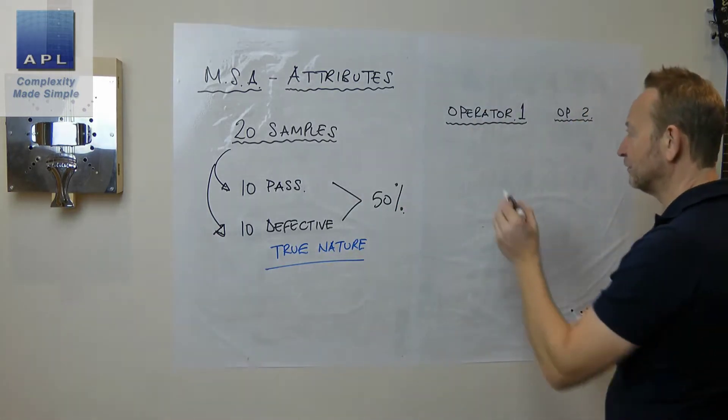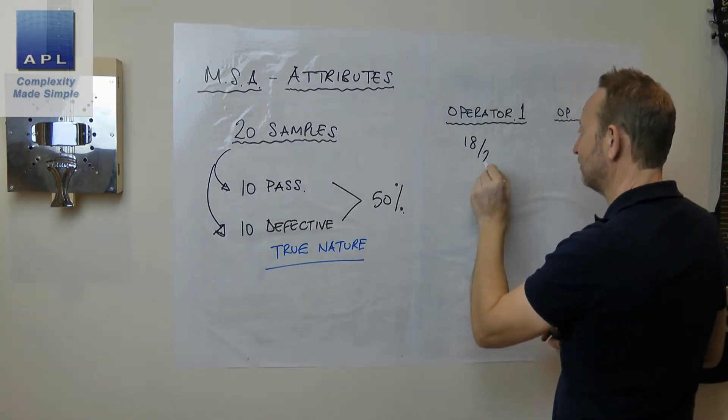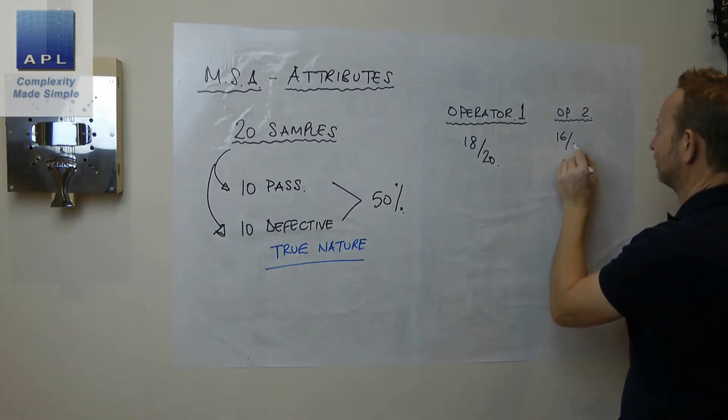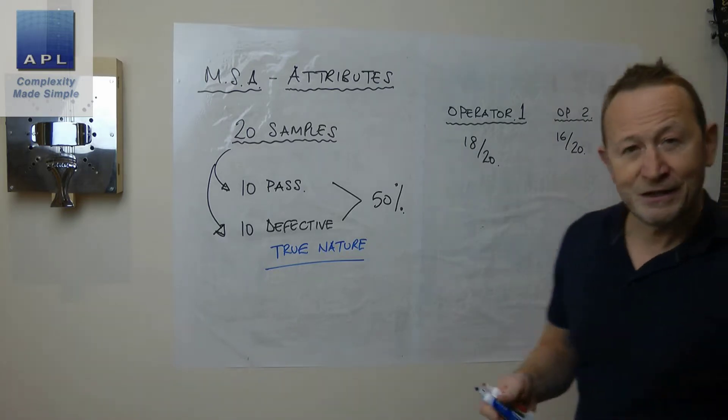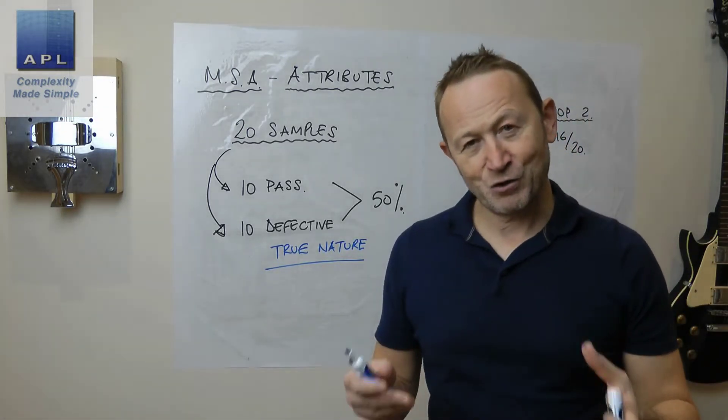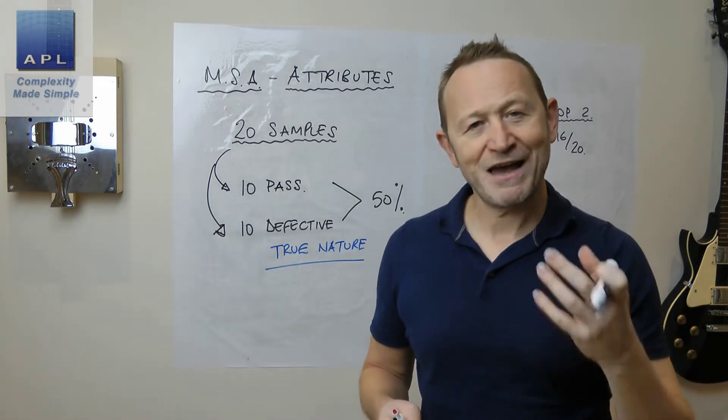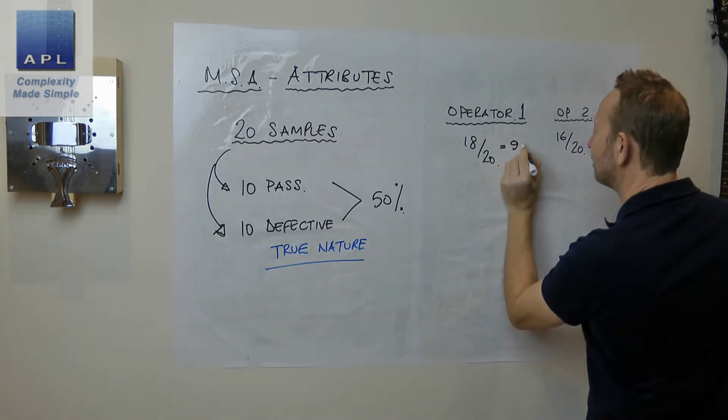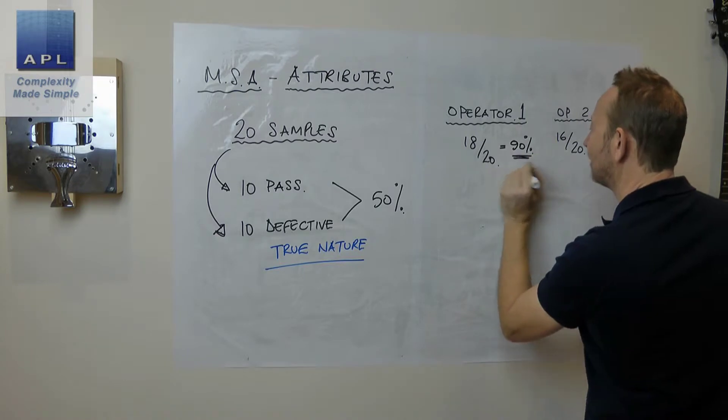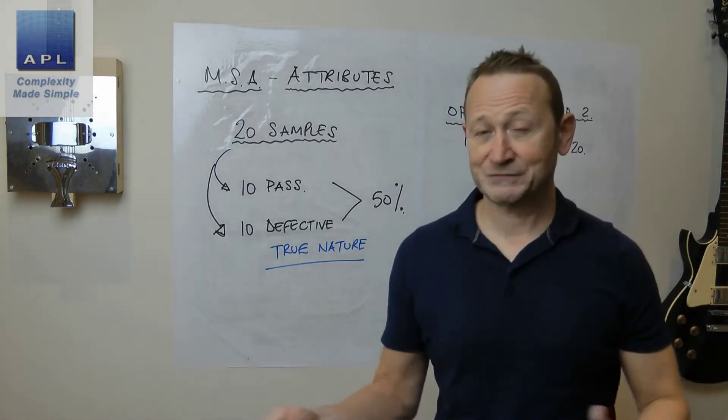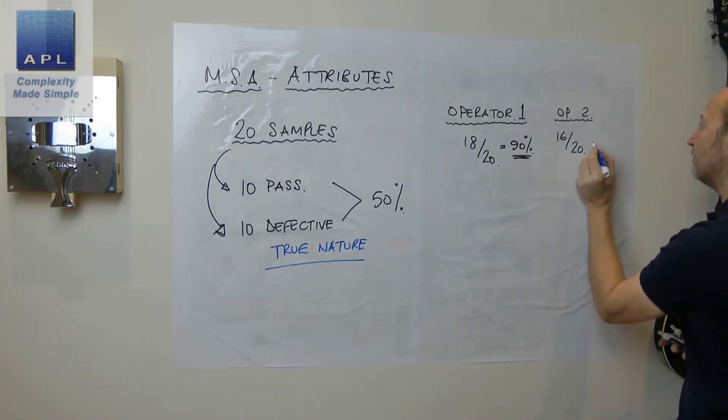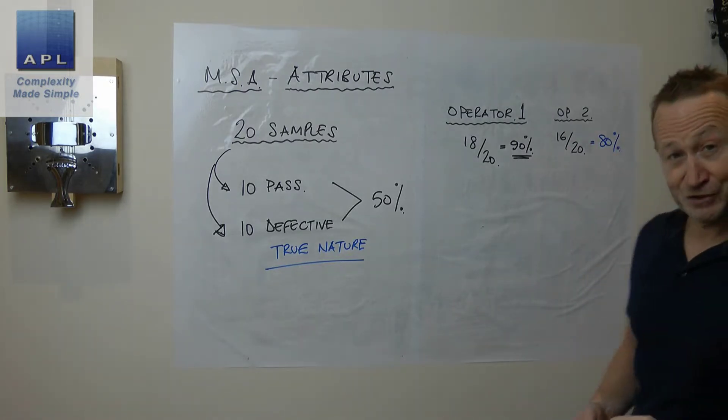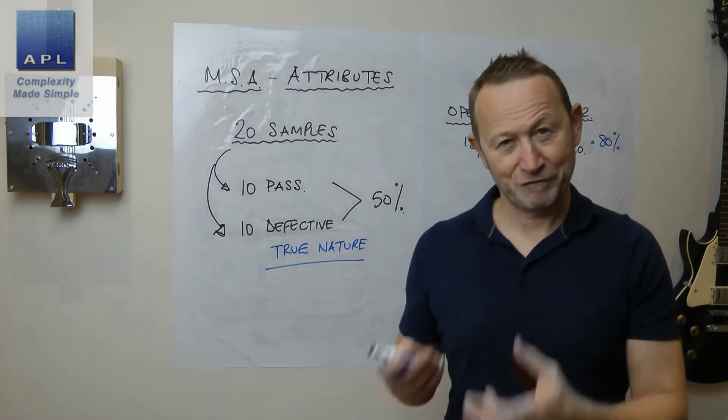So if operator one gets 18 out of 20 correct, and operator two gets, let's say 16 out of 20 correct, the first statistic that you're going to work out is what's their overall effectiveness. And it's just a percentage. So in this case, this system is 90% effective. It's very simple. This system over here is only 80% effective. So the first thing you're going to work out is the overall effectiveness of the system.